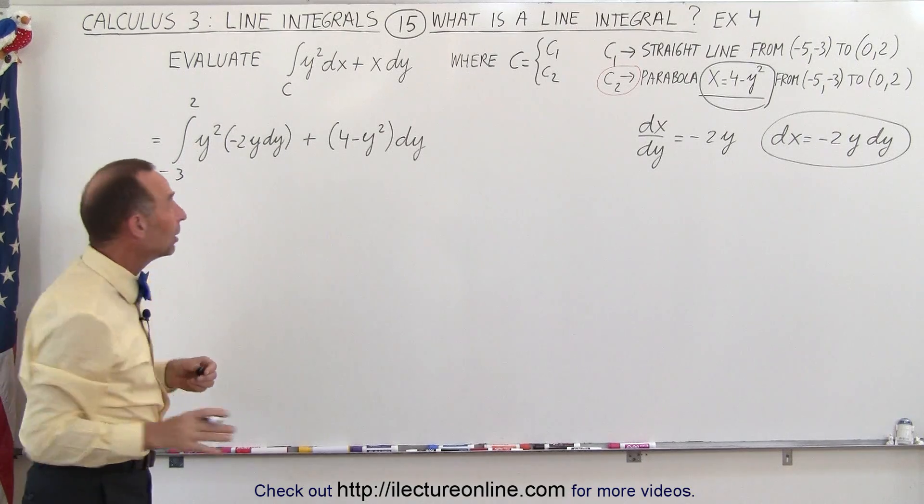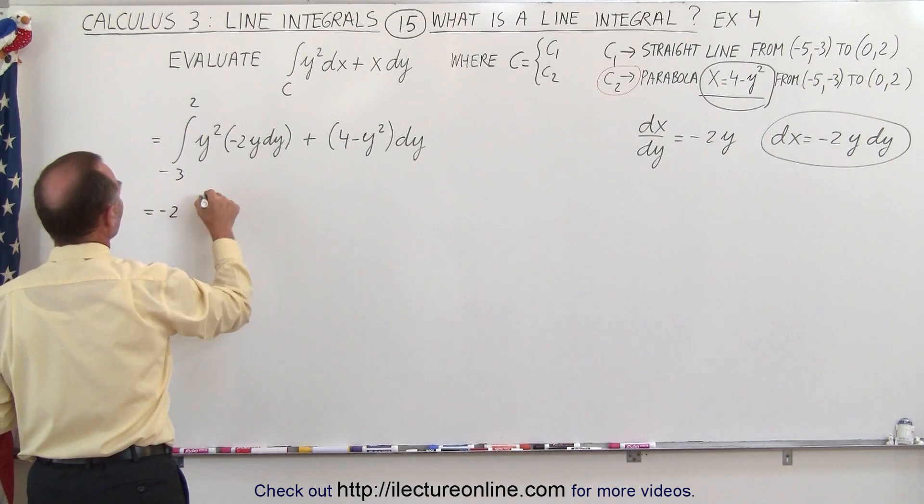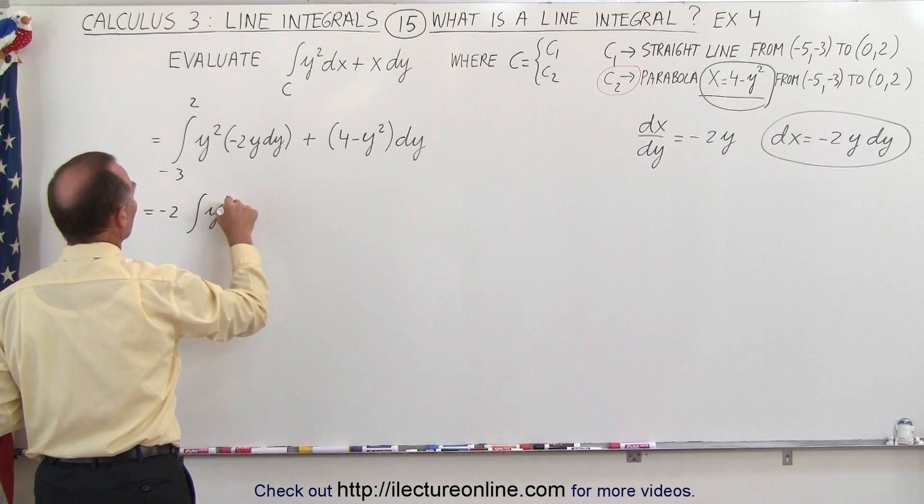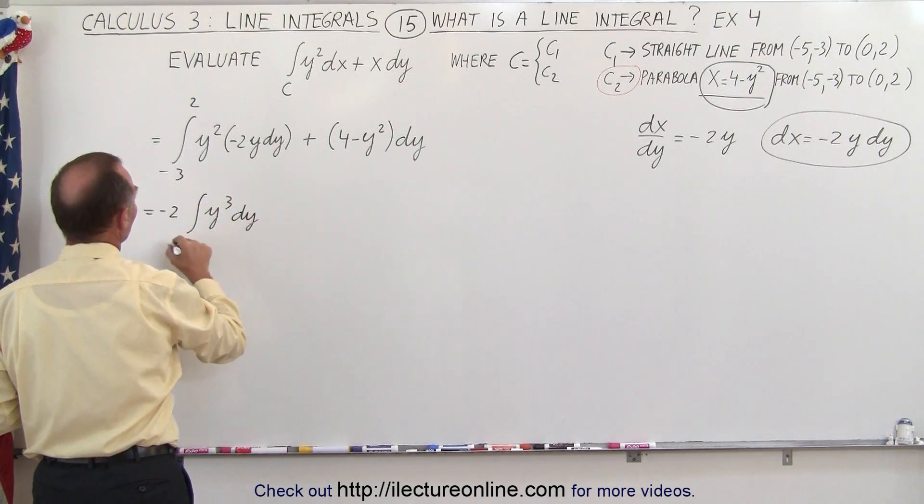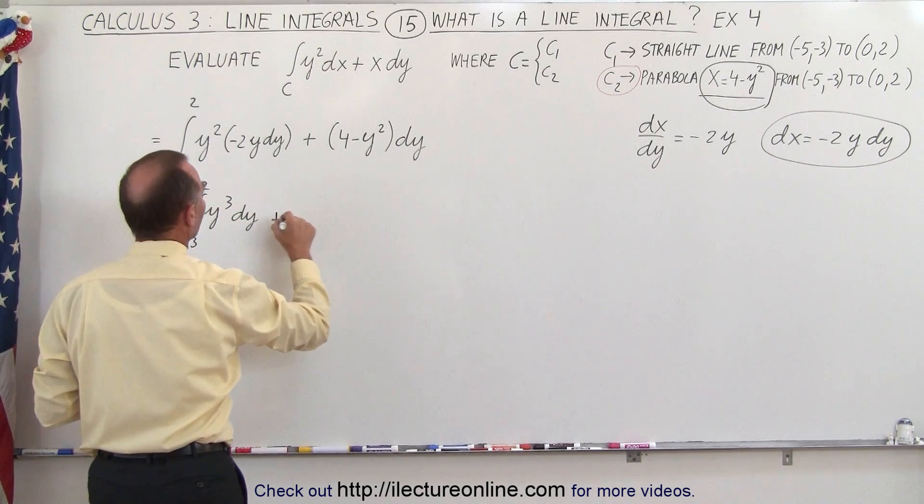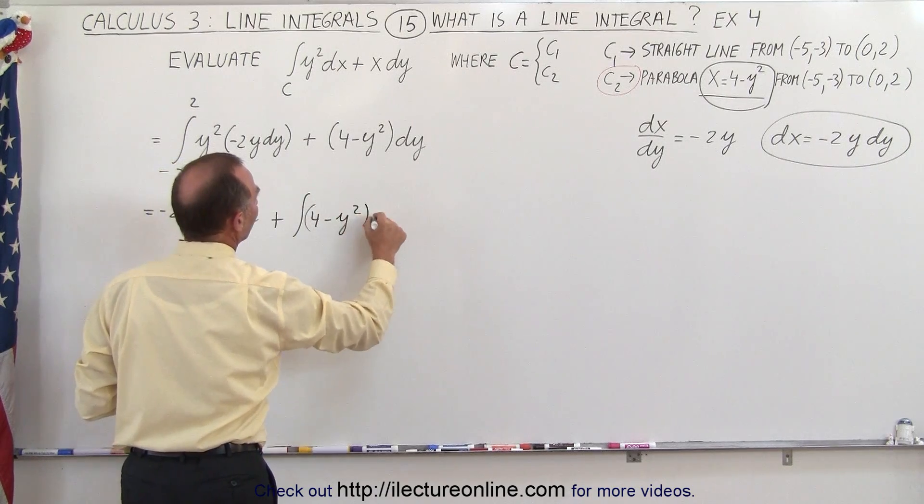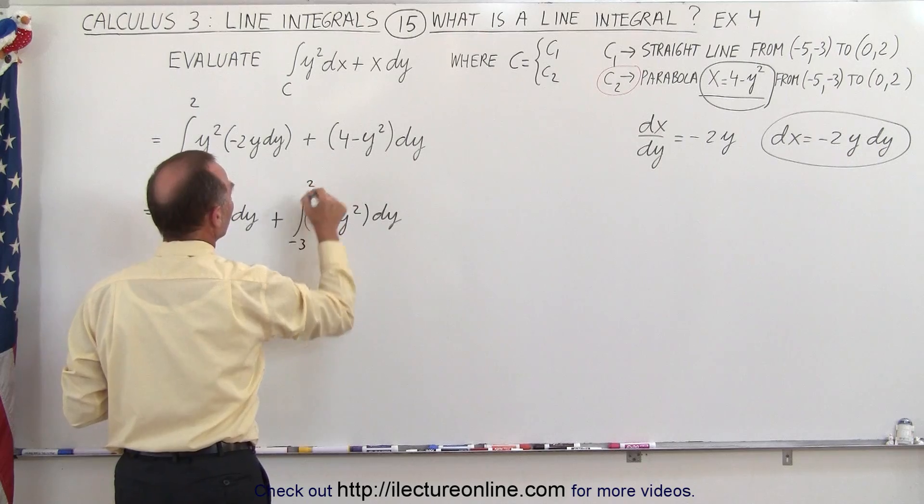So cleaning that up a little bit, we can write this as two separate integrals. This is equal to minus 2 times the integral of y cubed dy from minus 3 to positive 2, plus the integral of 4 minus y squared times dy from minus 3 to 2.